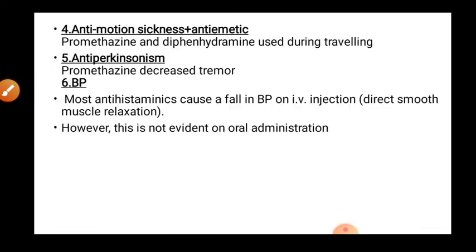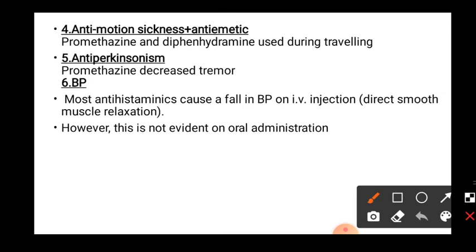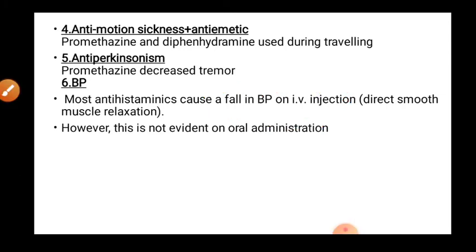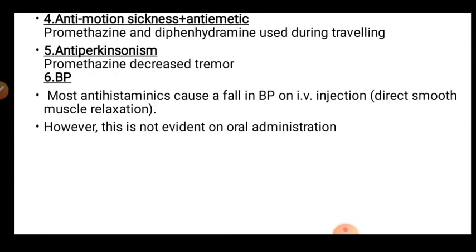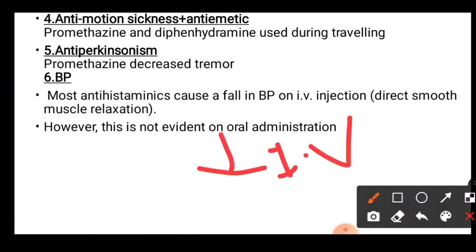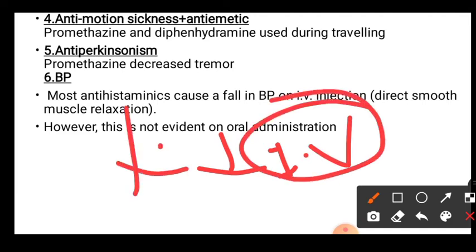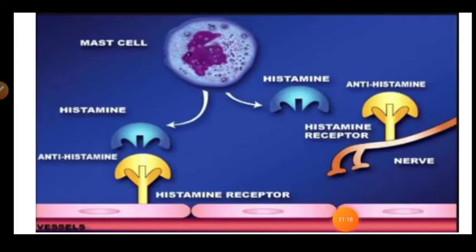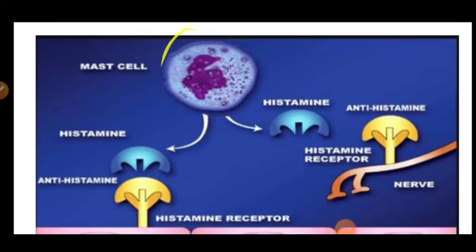Most antihistaminic drugs cause a fall in blood pressure when injected intravascularly, through direct smooth muscle relaxation. If antihistaminic drugs are taken intravenously, blood pressure decreases. However, this effect is not evident on oral administration — the blood pressure fall occurs only with intravenous use, not oral use.